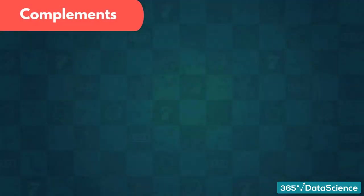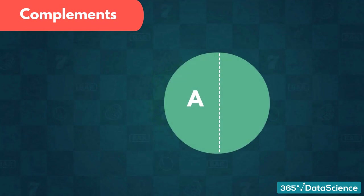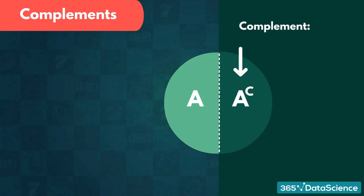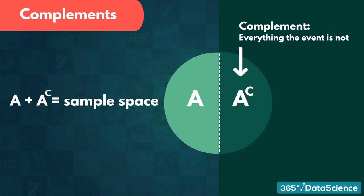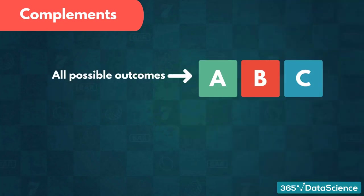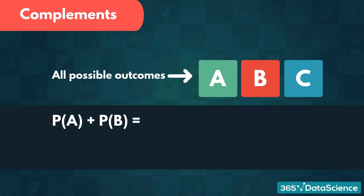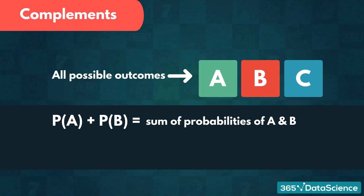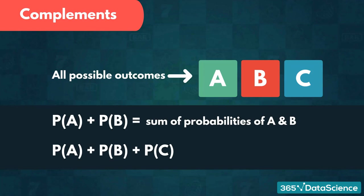Before we continue to the next section of this course, let's talk about some of the characteristics of probabilities and events. Let's define what a complement is. Simply put, a complement of an event is everything the event is not. As the name suggests, the complement helps complete the rest of the sample space. To calculate the probability of the complement of an event, we need to set up a few things. If we add the probabilities of different events, we get their sum of probabilities. If we add up all the possible outcomes of an event, we should always get 1. Remember that having a probability of 1 is the same as being 100% certain.